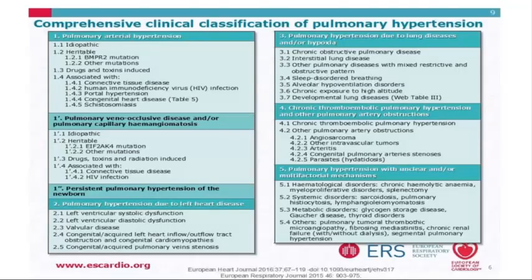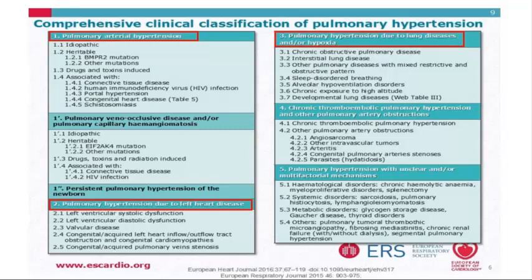There are five types of pulmonary hypertension. Type 1 is pulmonary arterial hypertension. Type 2 is secondary to left-sided problems—either systolic or diastolic heart failure or valve disease. It's always difficult to distinguish diastolic heart failure (HFpEF) from true PAH. Group 3 is due to interstitial lung disease, COPD, obesity hypoventilation, sleep apnea, or high-altitude pulmonary hypertension. We had a case of high-altitude pulmonary hypertension recently.